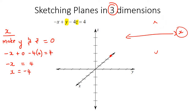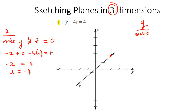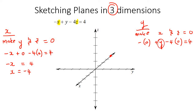Now we need to find the y point. You make the other two variables zero — so you make x zero and z zero. That gives you: minus zero plus y minus four times zero equals four, so y equals four. You go onto the y-axis — remember, the side with the letter is positive — and count one, two, three, four. Put a little dot there.